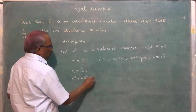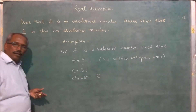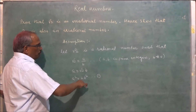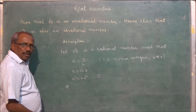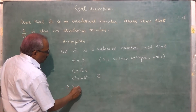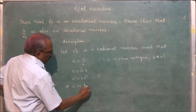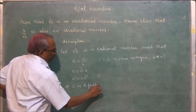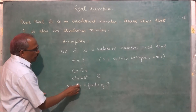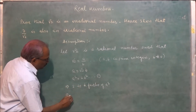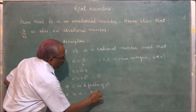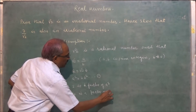Call this as equation 1. So a squared is equal to 2b squared. This implies 2 is a factor of a squared. If 2 is a factor of a squared, this implies 2 is a factor of a.